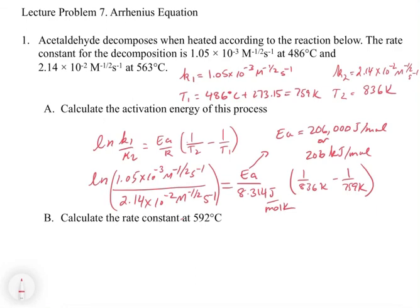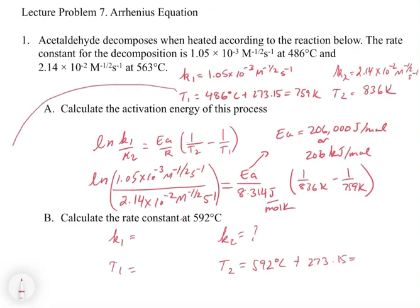We're not going to set up the second part of the problem, but basically it uses the same equation. You pick any one of the two k-T conditions from above — say K1, T1 — and then K2 is what you're solving for at T2 of 592°C plus 273.15 Kelvin. You now have the activation energy from the first part, so you plug everything in and solve for K2. You should try that on your own and make sure you can get the value.